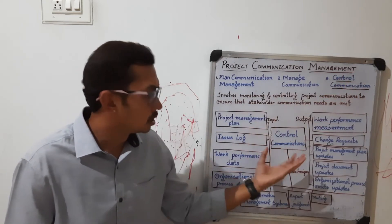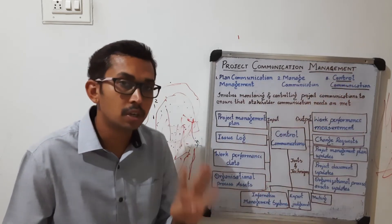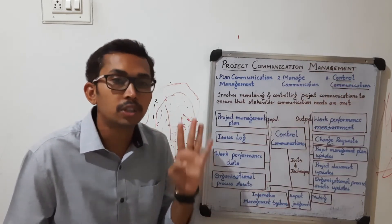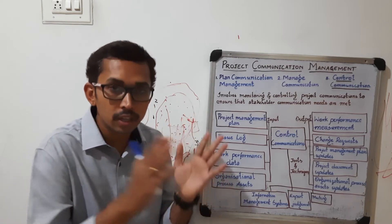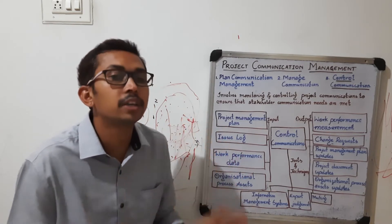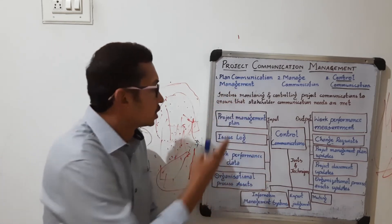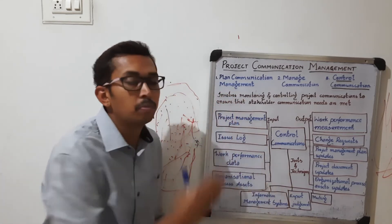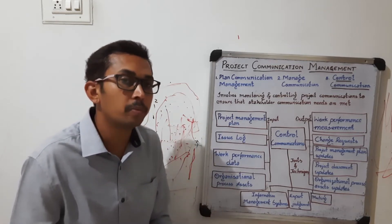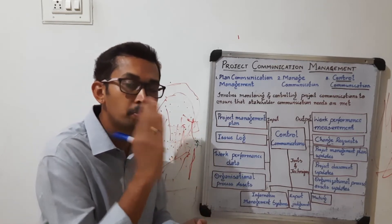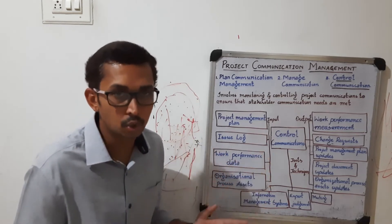Control communication comes into the picture in project lifecycle phase number 4 — the controlling and monitoring phase. The first input is the project management plan, which is a formal document that tells how to perform, execute, and control the project.